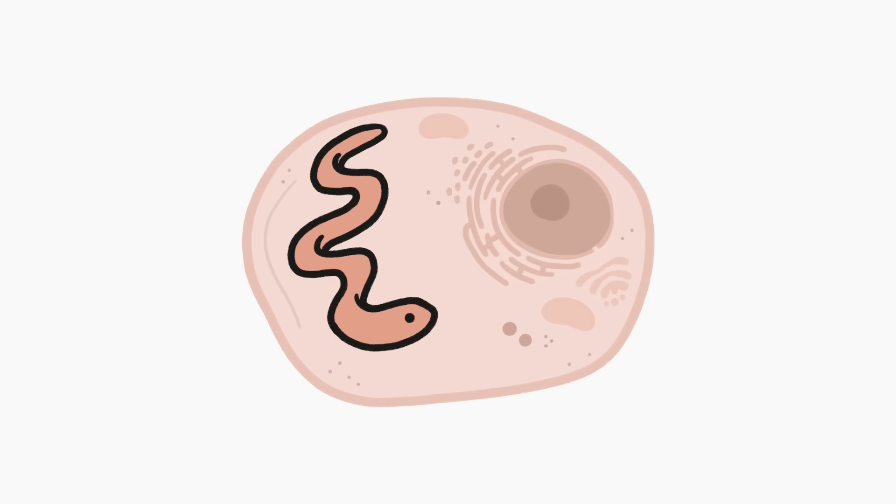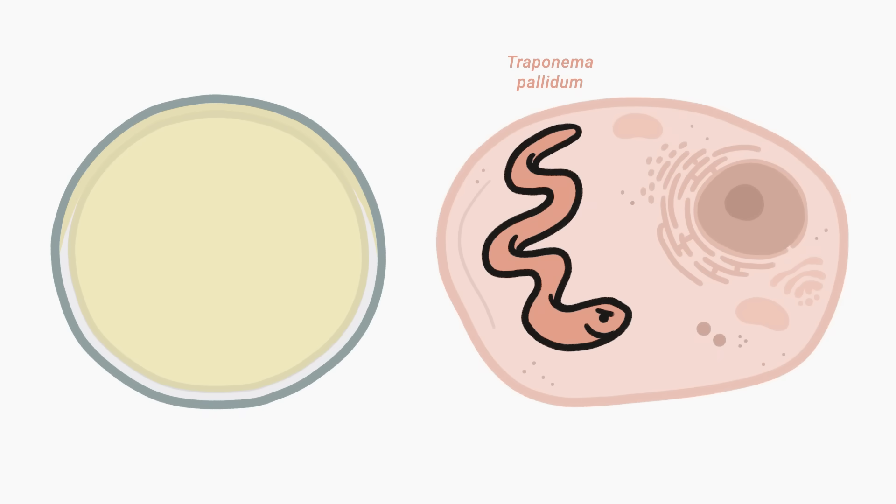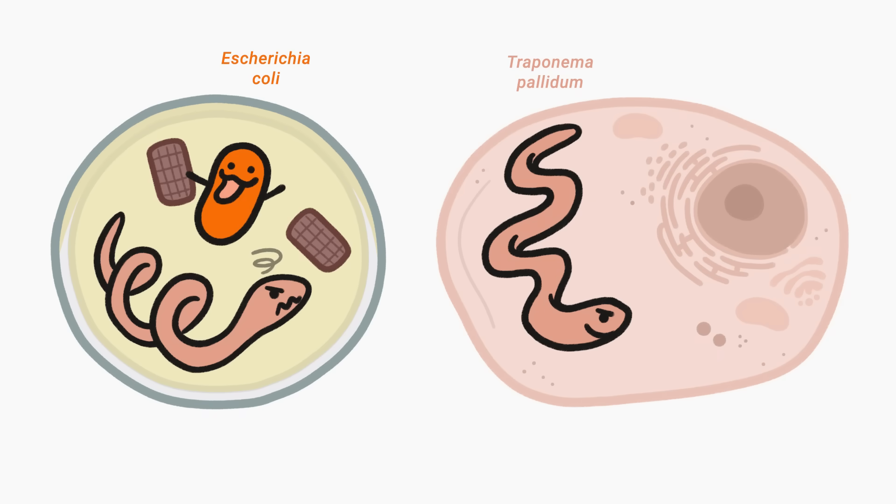And some bacteria are parasites that will only grow within living animal cells, but not in a friendly way. This is the case for the bacteria that causes syphilis. Putting a bacteria on a plate of jello is like feeding them candy bars, which does work for some species. But other species, like syphilis, are pickier. They need a constant supply of fresh nutrients like you can only get inside a host cell.